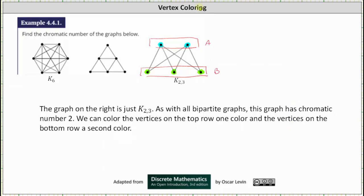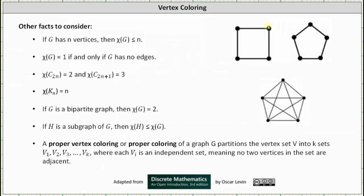Let's look at some additional facts about vertex coloring. If the graph G has n vertices, then chi of G, the chromatic number, is less than or equal to n. Chi of G equals one if and only if G has no edges. Chi of C sub 2n, the cycle on an even number of vertices, is equal to two, and chi of C sub 2n+1, a cycle on an odd number of vertices, is equal to three.